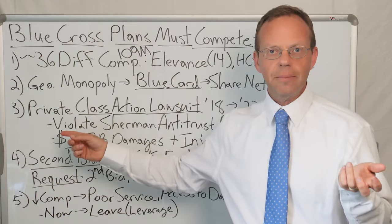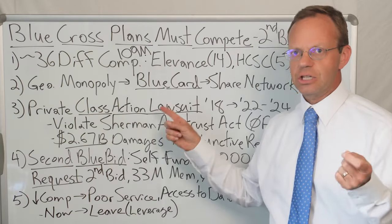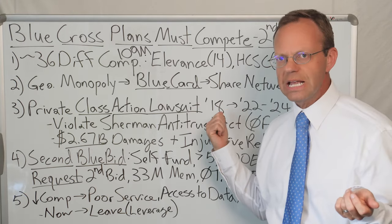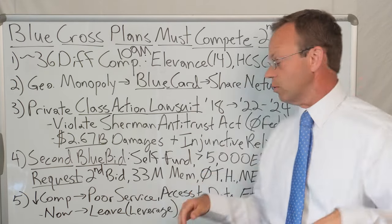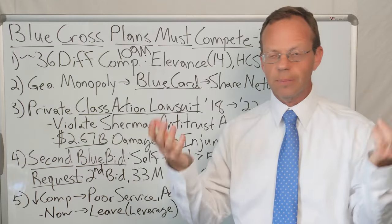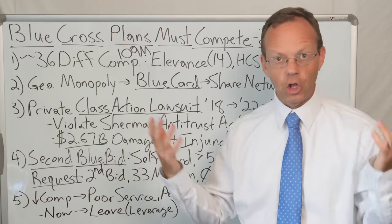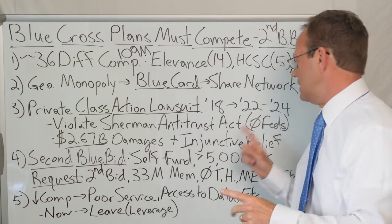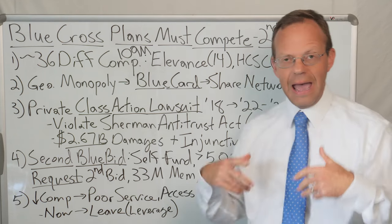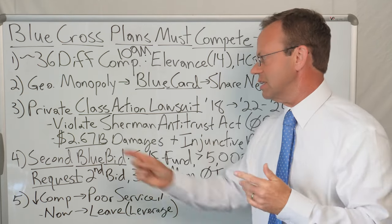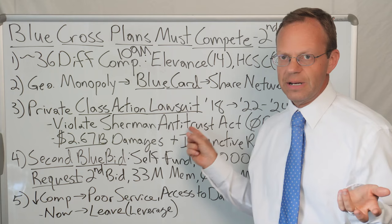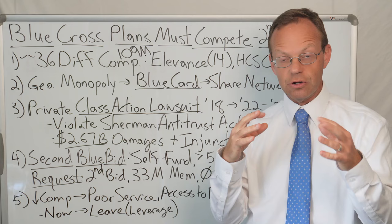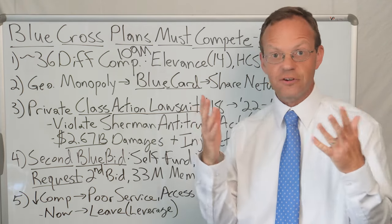Multiple employers in America got together and they did a private class action lawsuit against the Blue Cross Blue Shield Association. This started all the way back with the initial judgment in 2018, and then the final judgment was in 2022. And of course, the Blue Cross Blue Shield Association and all the plans didn't like this class action lawsuit stuff. And so they appealed, but that appeal was struck down in January of 2024. And this class action lawsuit essentially said that the Blue Cross plans are violating the Sherman Antitrust Act. They're colluding together. They have formed a cartel where they have prevented each other from competing with each other for employers in the different states.